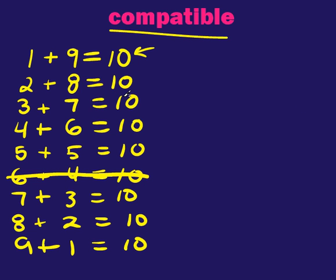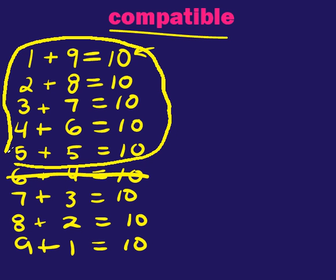If you know those, really there are only—how many are there here? There's 1, 2, 3, 4, 5 arrangements of compatible numbers. And the good news is,